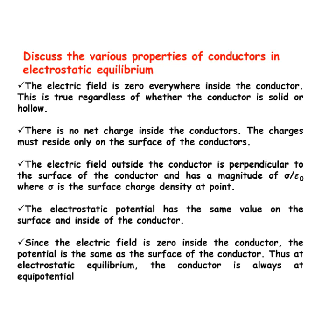The electric field outside the conductor is perpendicular to the surface of the conductor and has a magnitude of sigma divided by epsilon naught, where sigma is the surface charge density at that point and epsilon naught is the permittivity of free space.